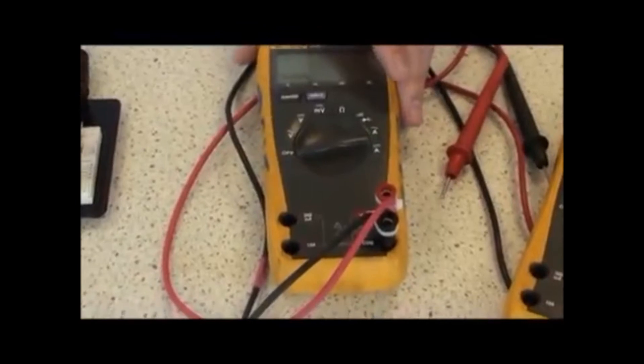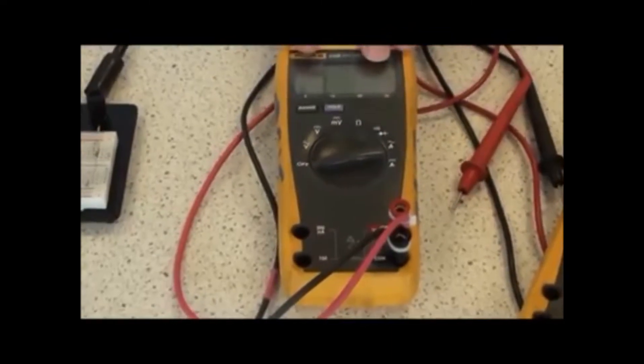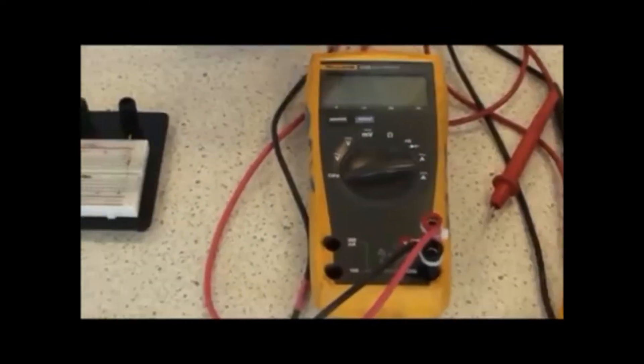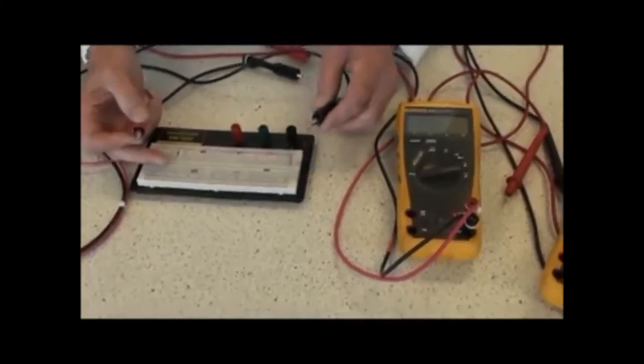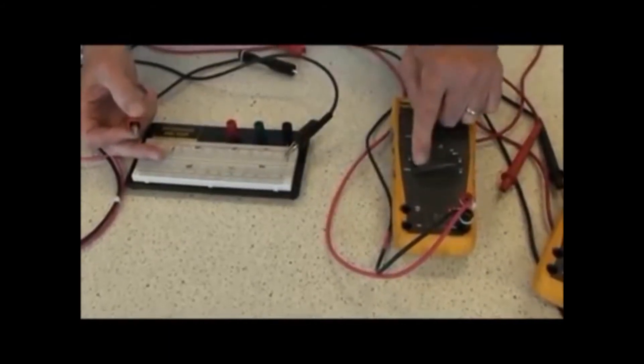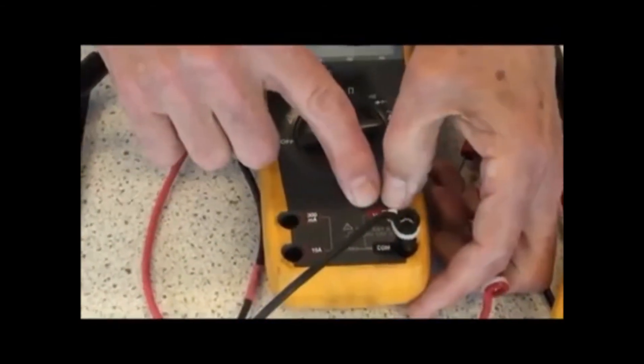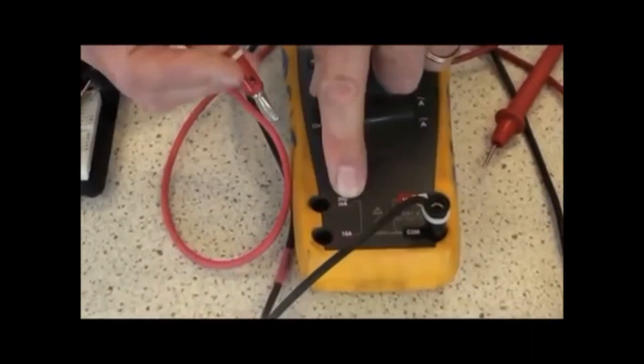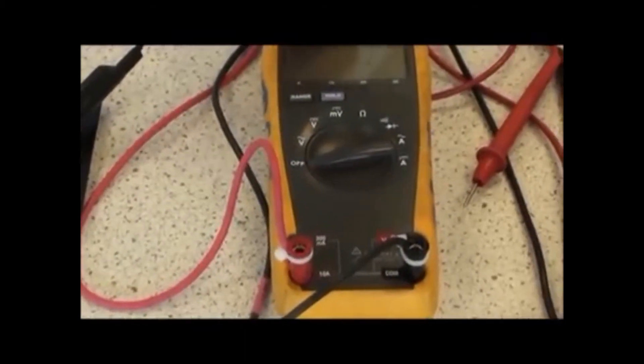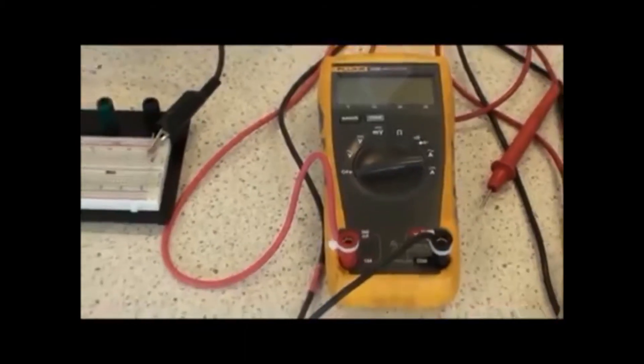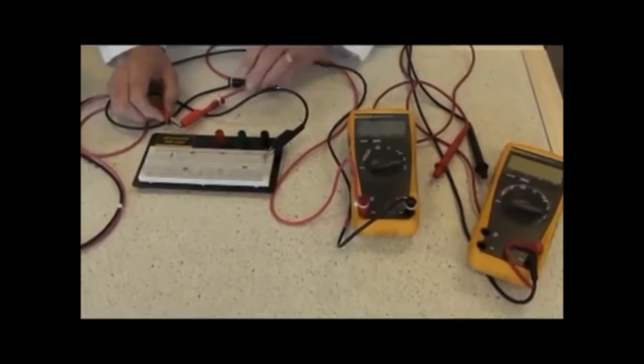Measuring current is very much the same as resistance in a similar way that the meter must become part of the circuit. So, instead of hooking my positive and negative of my power supply directly up to the circuit in question, I have to break the circuit and insert my meter. But first, I have to take my red lead out of the volts and ohms and place it in the highest current, 10 amps in this case. I then take the red lead, my positive lead of the meter, and put it on the red positive lead of the power supply.